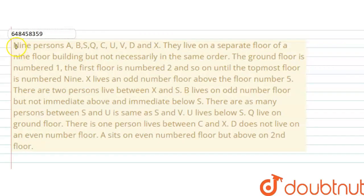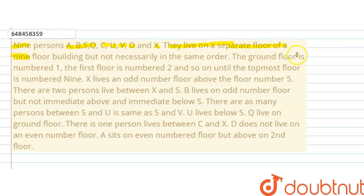Hello everyone, let's solve this problem. The question is given: 9 persons A, B, S, Q, C, U, V, D and X live on separate floors of a 9-floor building, but not necessarily in the same order. The ground floor is number 1, the first floor is number 2, and so on until the topmost floor is number 9.